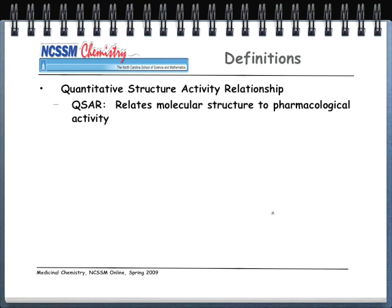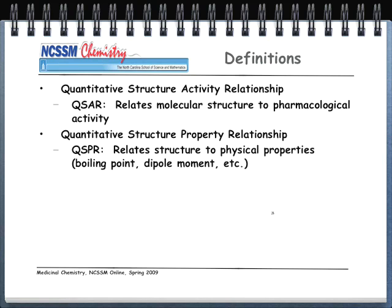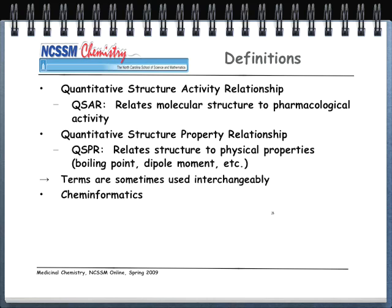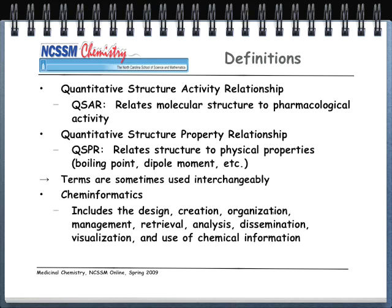Some quick definitions: QSAR relates molecular structure to pharmacological activity. QSPR relates structure to physical properties such as boiling point and dipole moments. Lots of general campus use QSPR; QSAR's 'A' really stands for biological or pharmacological activity. The terms are often used interchangeably. Another term you'll hear is cheminformatics, which includes the design, creation, organization, management, retrieval, analysis, dissemination, visualization, and use of chemical information. Basically, anything that's computational chemistry is also known as cheminformatics, and oftentimes these terms are used interchangeably, though some scientists distinguish them. These are terms you're going to hear a great deal in the remainder of your professional career.